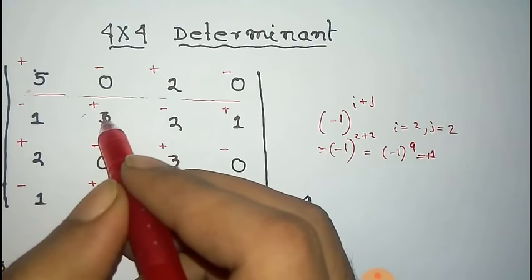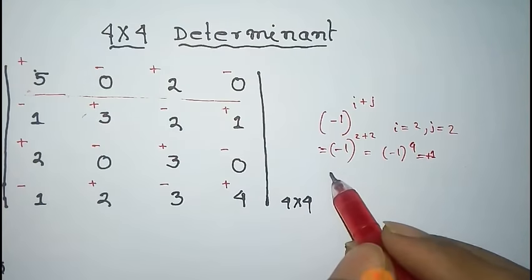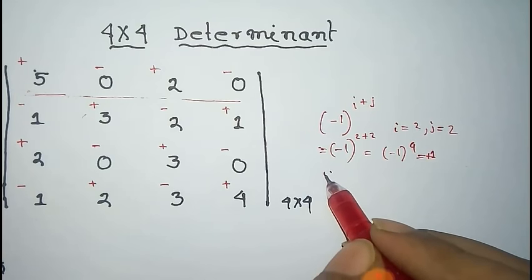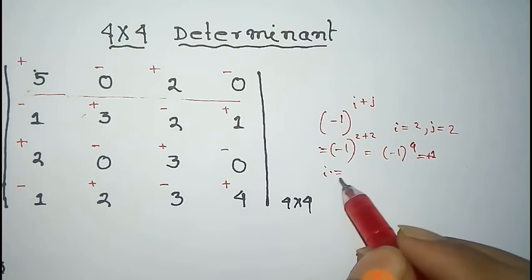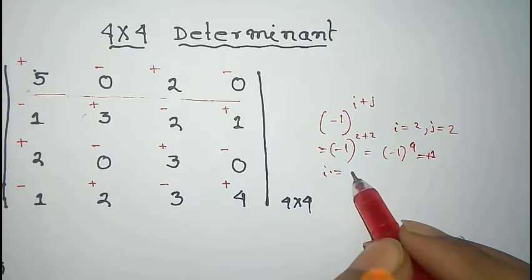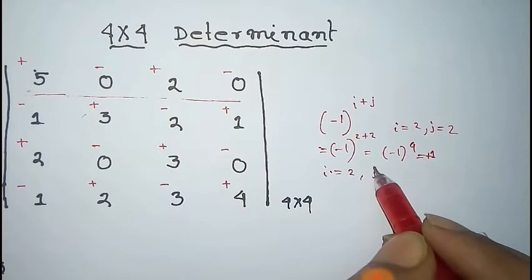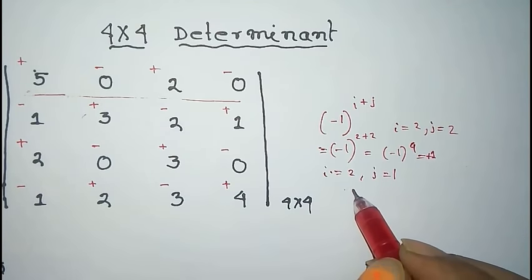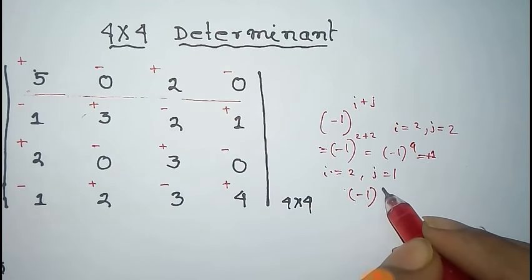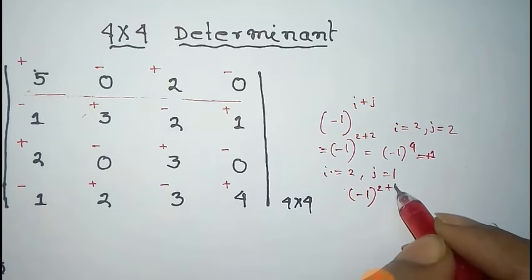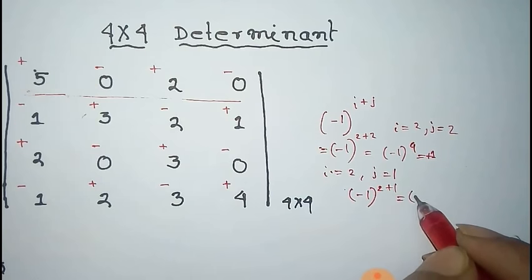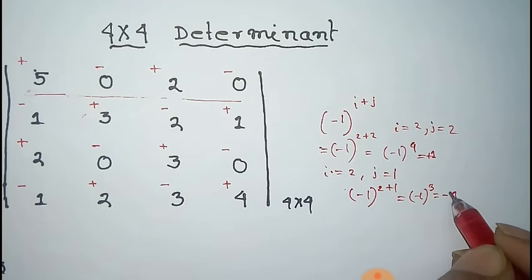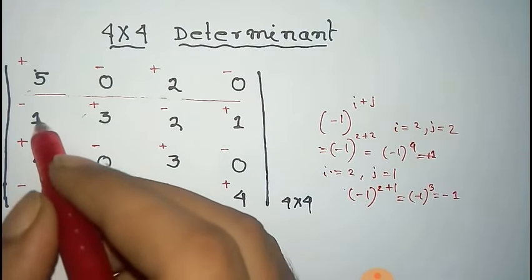For element 1, the row number is 2 but the column number is 1, so it's minus one to the power two plus one, that is minus one to the power three, equal to minus one — so the sign is minus. Using this rule, we can determine the sign of every element.